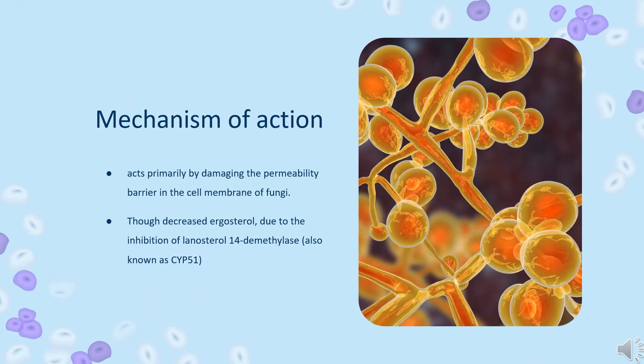Mechanism of Action: Tiaconazole interacts with 14-alpha-D-methylase, a cytochrome P450 enzyme that converts lanosterol to ergosterol, an essential component of the yeast membrane. In this way, Tiaconazole inhibits ergosterol synthesis, resulting in increased cellular permeability. Tiaconazole may also inhibit endogenous respiration, interact with membrane phospholipids, inhibit the transformation of yeasts to mycelial forms and the uptake of purine, impair triglyceride and/or phospholipid biosynthesis, and inhibit the movement of calcium and potassium ions across the cell membrane by blocking the ion transport pathway known as the Gardos channel.